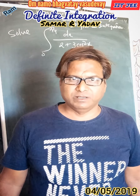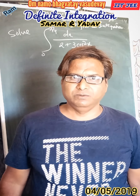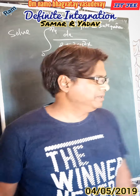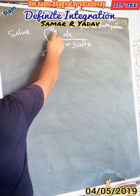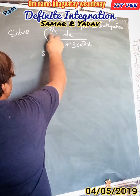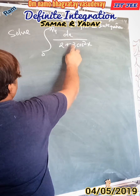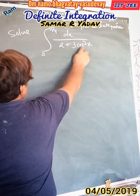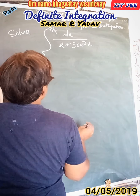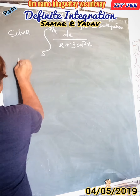Today in mathematics, we have definite integration. Now, as you can see here, it is the solved integration from 0 to π/4 of dx upon 2 plus 3 cos squared x.